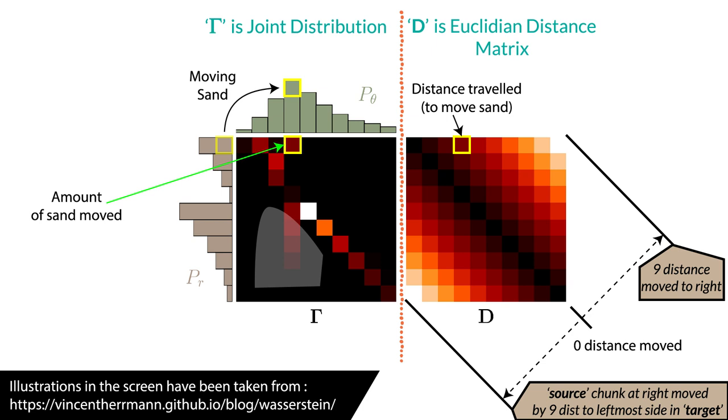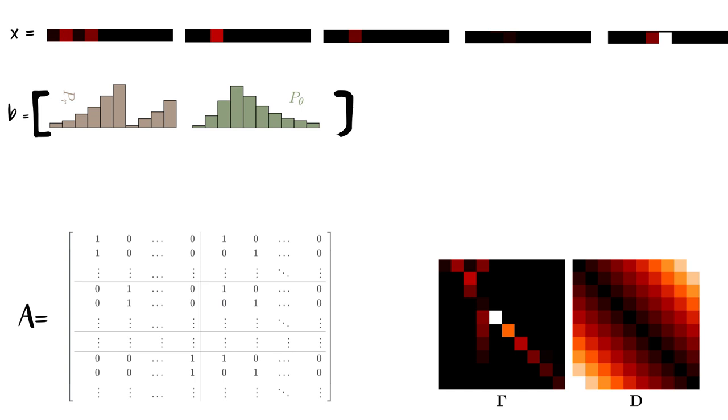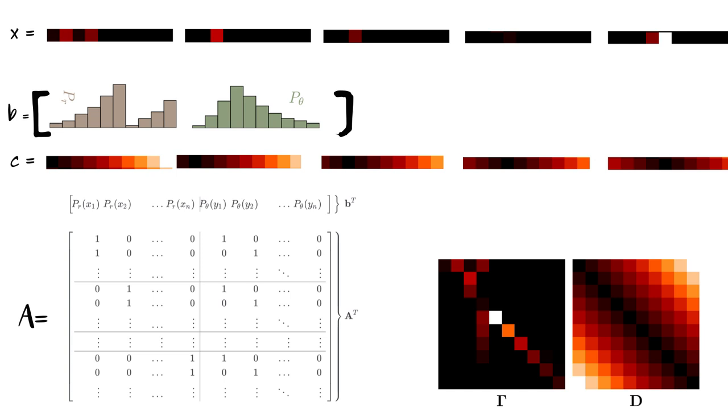You see how smartly Professor Kantorovich formulated the problem? Let X be a rasterized version of transport plan. If we concatenate the rasterized version of source and target distributions, then we get something like B. Now let A be a binary matrix which is cherry-picking the values from X such that they sum up to the distribution values or B. Now this A is just marginalizing the distribution across the row and columns to obtain P_real and P_theta. If we consider C as the rasterized version of Euclidean distance matrix, then minimizing C transpose X is equal to minimizing the overall work.